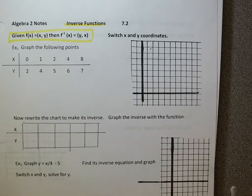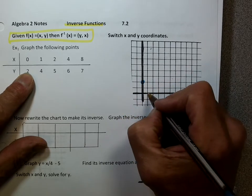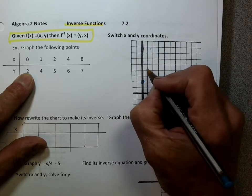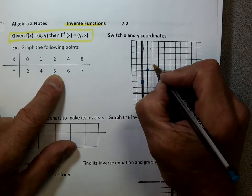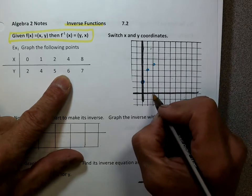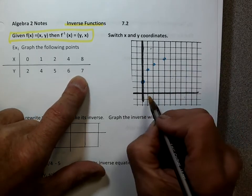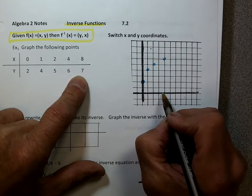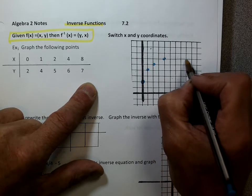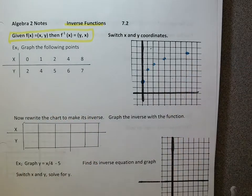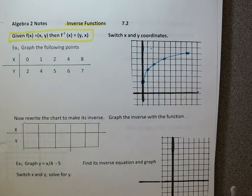I'm going to graph these points in blue: (0, 2), (1, 4), (2, 5), (4, 6), and (7, 8). There's my graph.